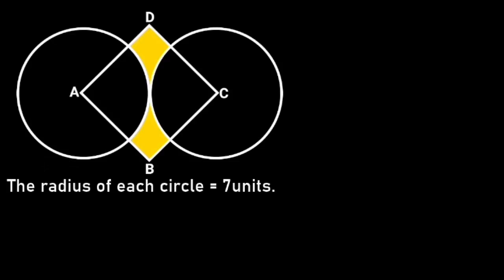In this figure, a square overlaps two circles that are tangential to each other. If the radius of each circle is 7 units, find the area of the shaded portion.